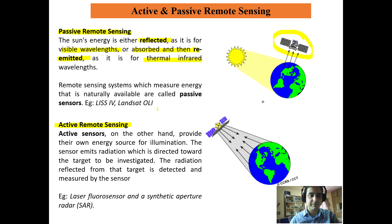Examples of passive sensors are LISS4 and Landsat OLI — Landsat Operational Land Imager. LISS4 is an Indian sensor and Landsat OLI is a US-based sensor.